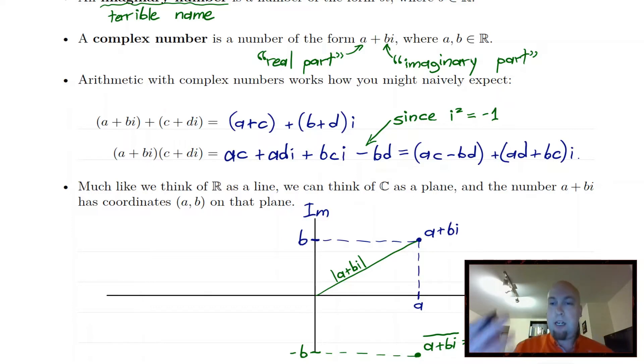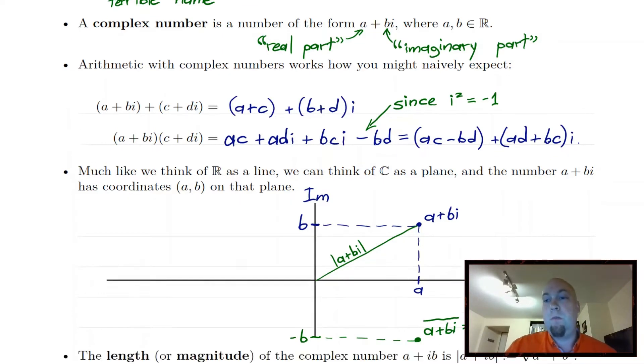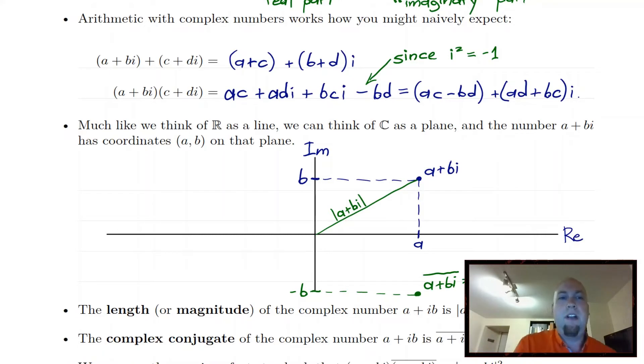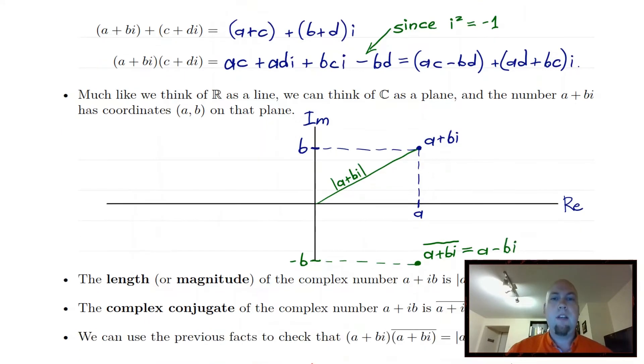Usually when we write complex numbers down, we like to group the real part together and the imaginary part together. So you get this as your real part and all of this times i coming from the cross term there. So that's how you multiply complex numbers together. It's not like you have to remember this formula or anything like that. You just multiply them as you would multiply them if they were real numbers. So using, if you're used to the FOIL acronym, I mean, that's all you're doing. You're multiplying the four pieces together.